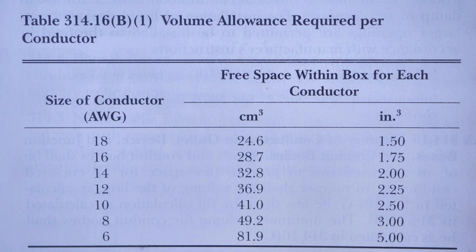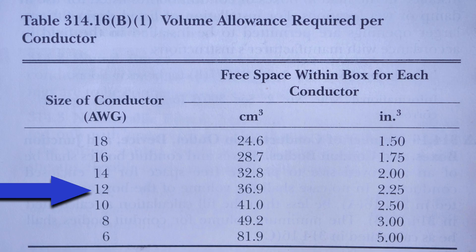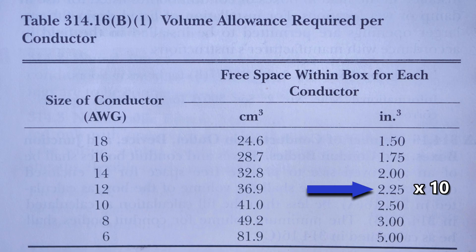We'll start at table 314.16B1 in the 2023 NEC, volume allowance required per conductor. This is the size of conductor in AWG. We find that the cubic inches per 12 gauge conductor is 2.25. We have 10 of these 12 gauge conductors, so we multiply this by 10.